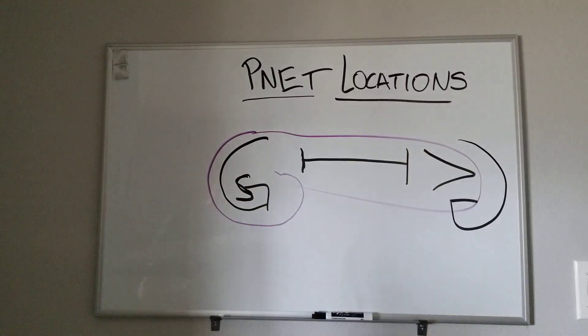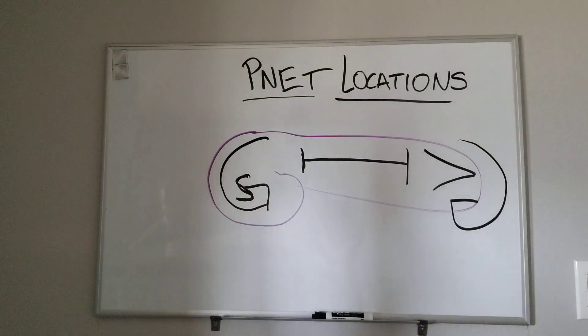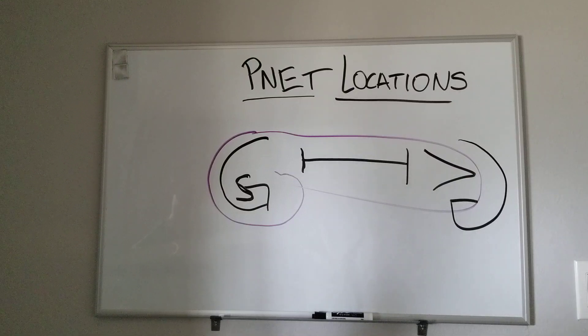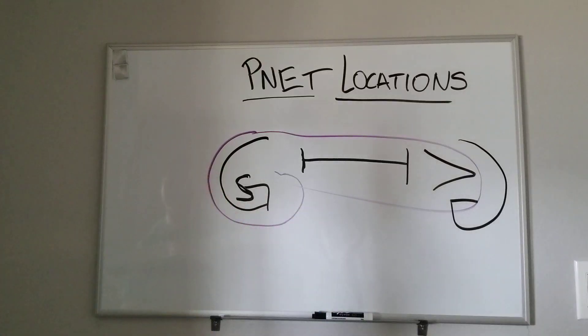And there you have the five PNETs. Gastrinoma is classically found in the head. We have a different video talking about the gastrinoma triangle. That's probably most useful for step one, level one-type situations. And then somatostatinoma is also found in the head and neck region.